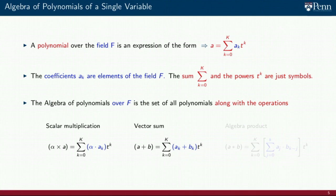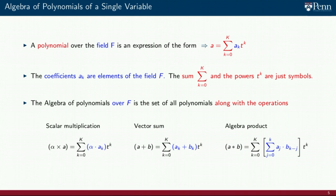The vector sum of two polynomials is defined as the polynomial whose coefficients are the sum of the given polynomial coefficients. Again, the sum highlighted in blue here is an actual sum — the sum of elements of the field, the sum of two real numbers, for instance. Finally, the algebra product is defined as a polynomial in which the coefficient multiplying T to the K is the sum of the products of coefficients A sub J and B sub K minus J, where the sum of the indices is K. Again, the operations highlighted in blue are operations in the field. The interpretation of this algebra is that we have abstract symbols we call polynomials. These abstract symbols can be manipulated with these three operations, and these three operations satisfy the conditions stated in the definition of an algebra.